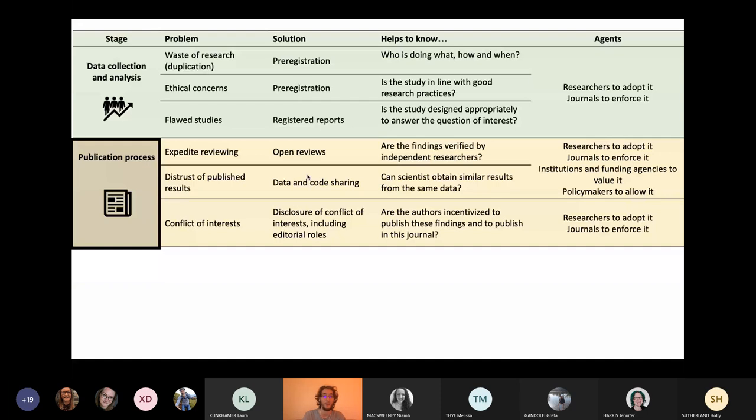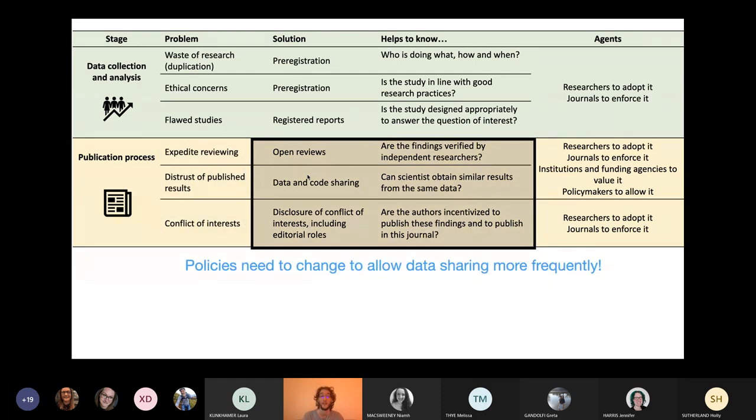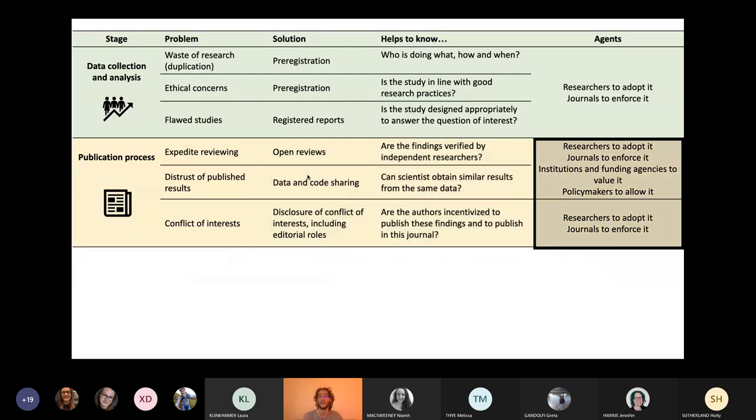So summing up this second step, the publication process, the issues we found were the fast track of peer reviewing combined with editorial conflict of interest and the distrust of published results that happened after the retraction of this major paper from the Lancet. Solutions for this is obviously open data and open source code and disclosure of conflict of interest, including for editorial roles and having open review. The issue of data and code sharing is that we need policies to change to allow it. So it's up to researchers to adopt it and journals to enforce it, but we also need institutions and funding agencies to value the kind of things that we do. They need to value open review, they need to value the code that we share, but we also need policymakers to find a way to allow this data to be shared, even if just to a trusted third party.